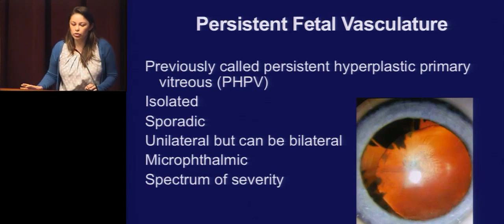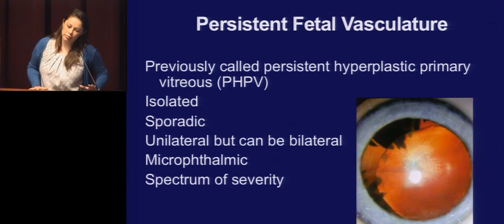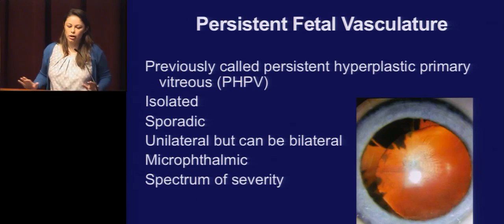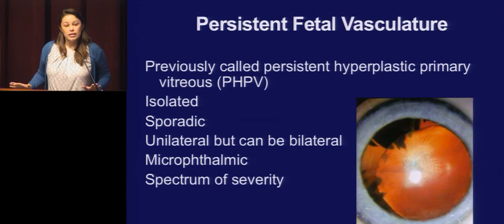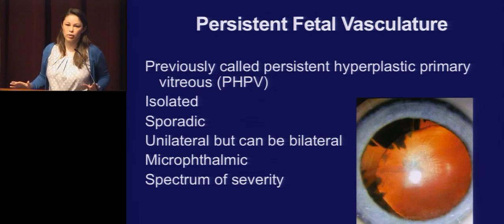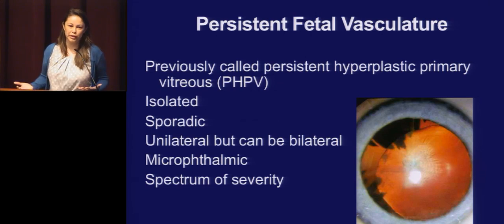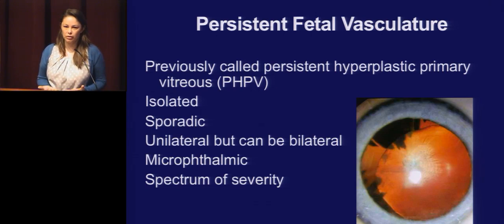PFV — previously called PHPV — is isolated, sporadic, and usually unilateral. On your tests and questions, it's going to be presented as unilateral. However, we see it bilateral all the time, especially in Levin's genetic clinic.